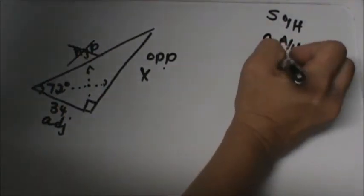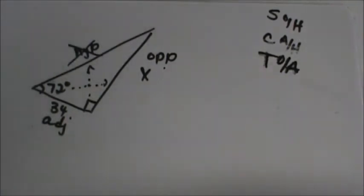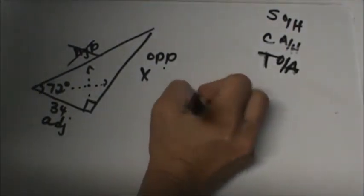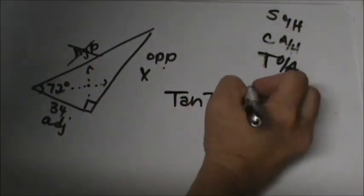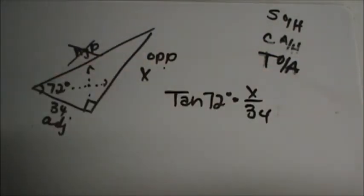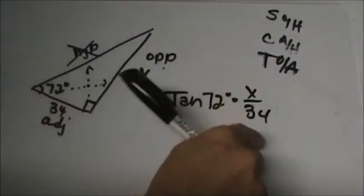Let's try the second practice problem. We have a 72 degree reference angle. We have 34 over here and x over here. So from the 72 degree angle, x is our opposite, this is our hypotenuse, and this one is our adjacent. So we're not using the hypotenuse. Which one uses opposite and adjacent? That's tangent. So the tangent of 72 is equal to x over 34.